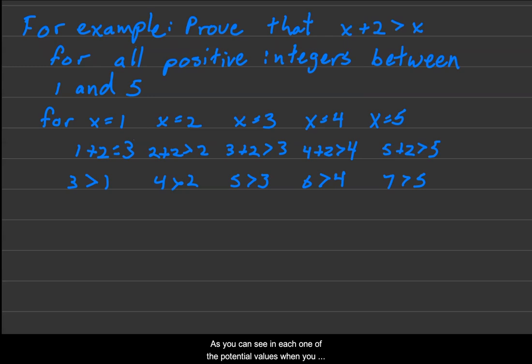As you can see in each one of the potential values when you substitute x into x plus 2 is greater than x, you get 3 is greater than 1 for x is 1, 4 is greater than 2 for x is 2, 5 is greater than 3 for x is 3, 6 is greater than 4 for x is 4. Lastly, you have 7 is greater than 5 for x value being equal to 5, and that would be your complete exhaustive proof.